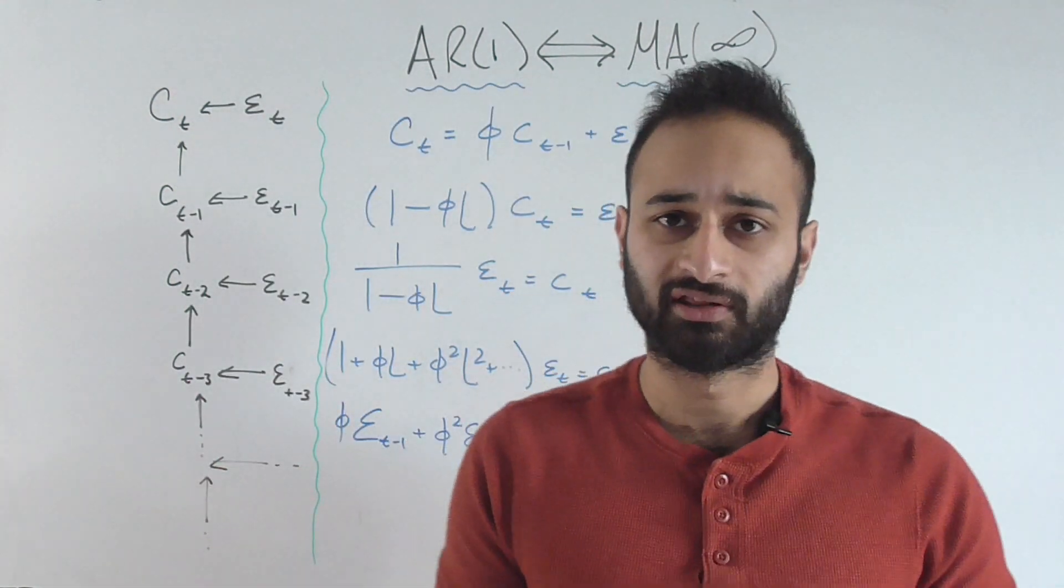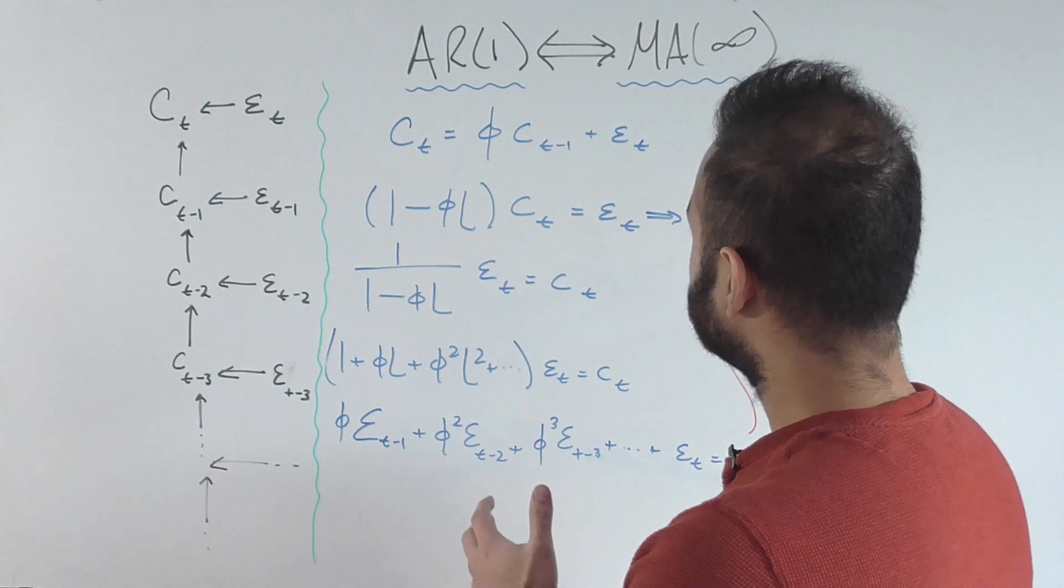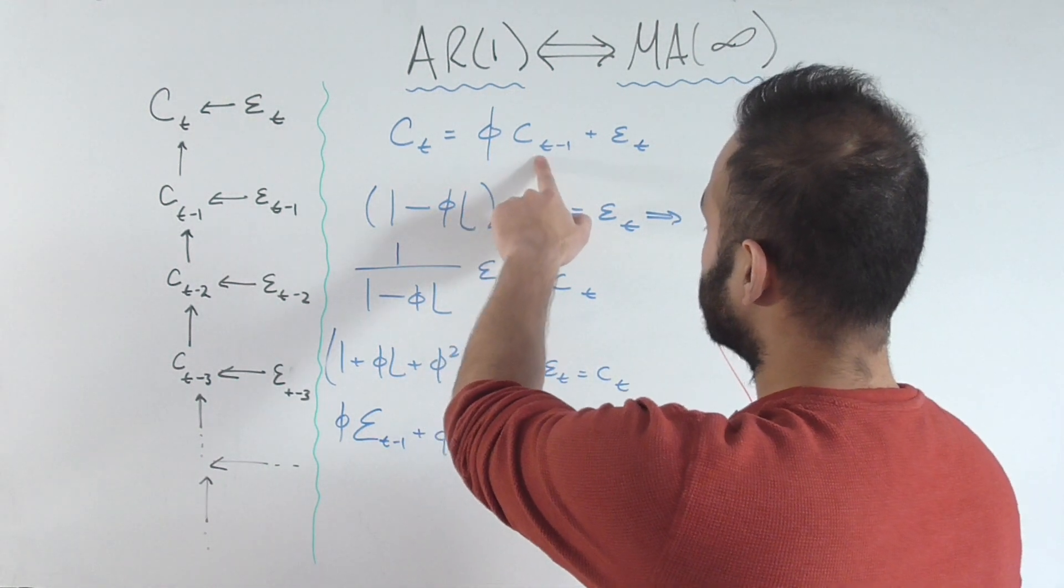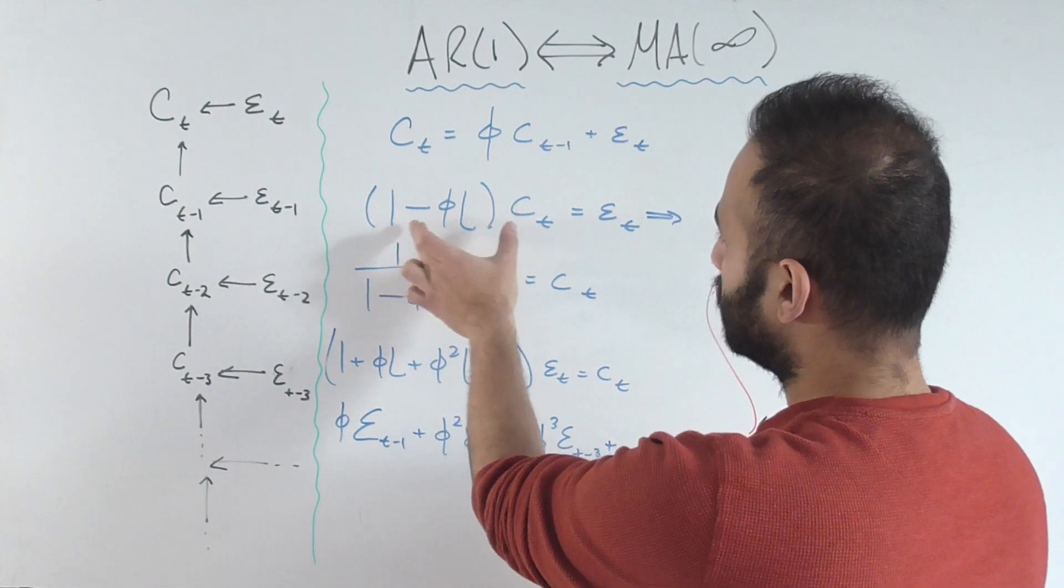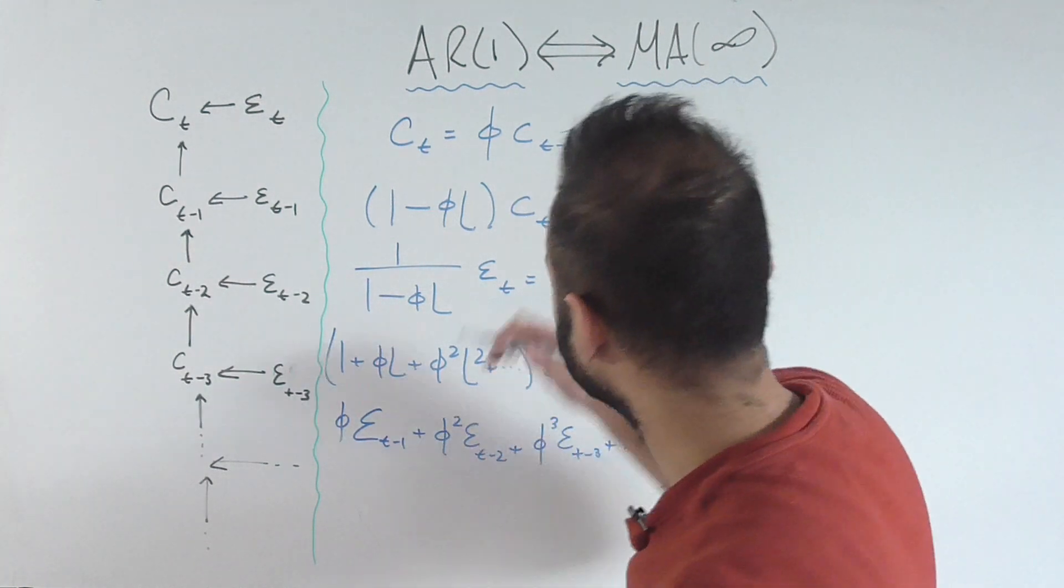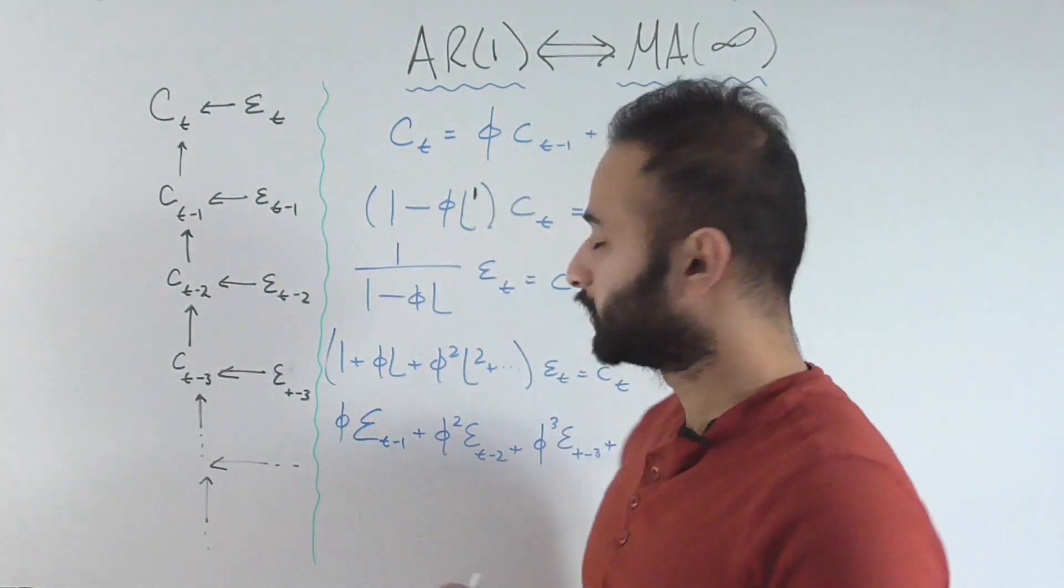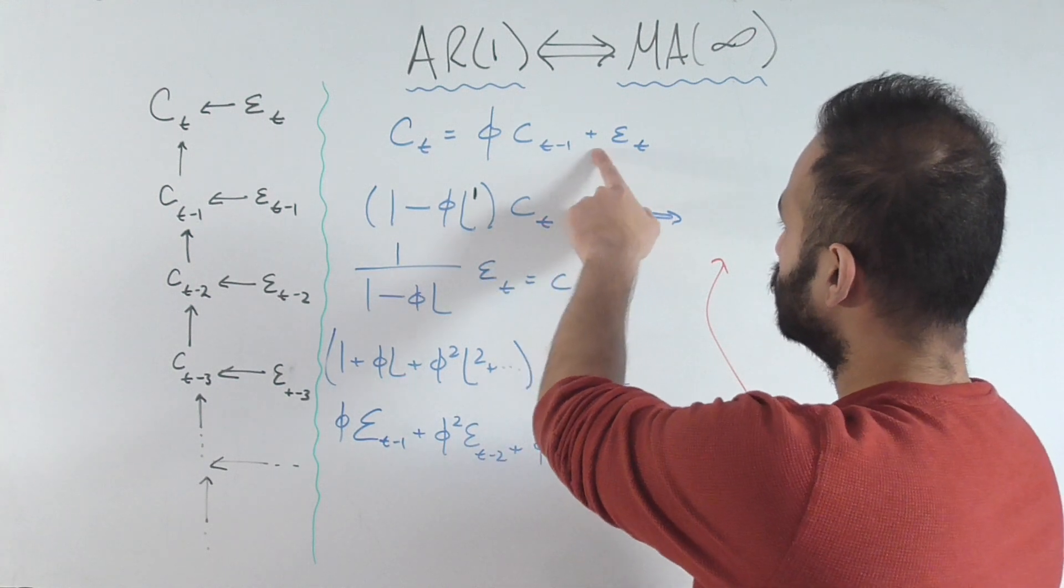Now, as we did in the previous video, we're going to do some operations on equations. Let's first move this φc_t-1 to the other side, so subtract it. We're going to factor out this (1 - φL). This is using the lag operator. You can think of an exponent 1 here if you'd like, multiplied by c_t equals ε_t.